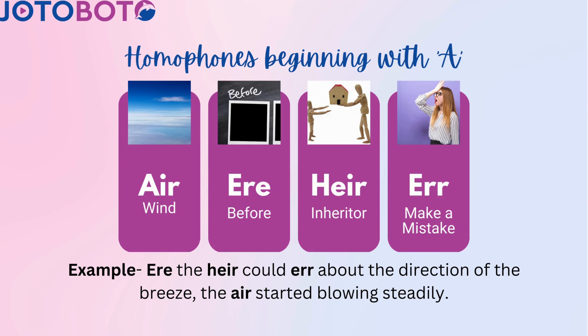A-I-R: 'air' means wind. E-R-E: 'ere' means before. H-E-I-R: 'heir' means inheritor. E-R-R: 'err' means to make a mistake. The heir could err about the direction of the breeze. The air started blowing steadily.